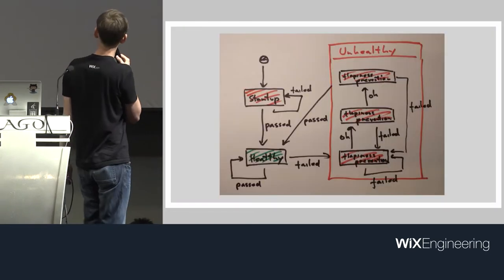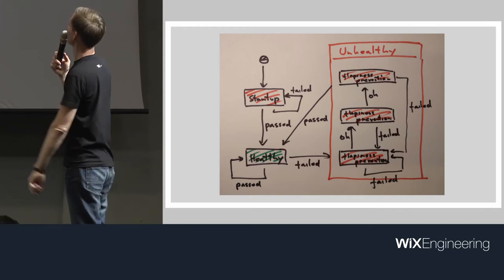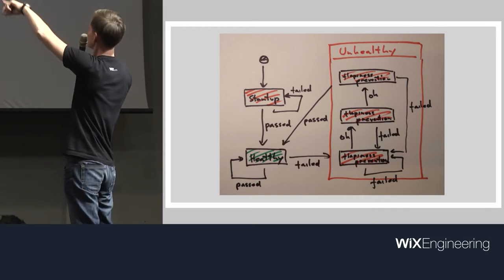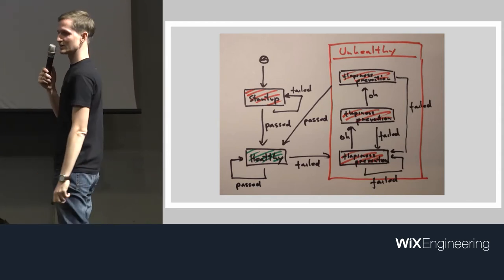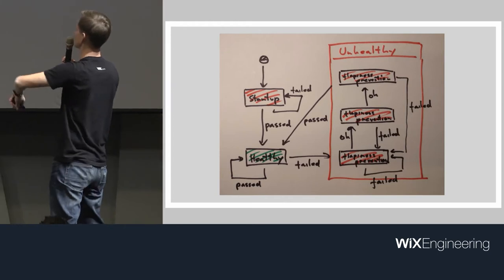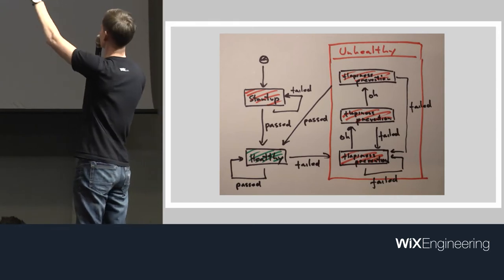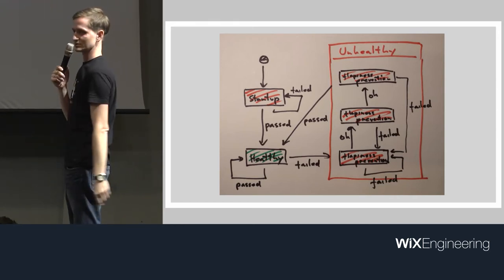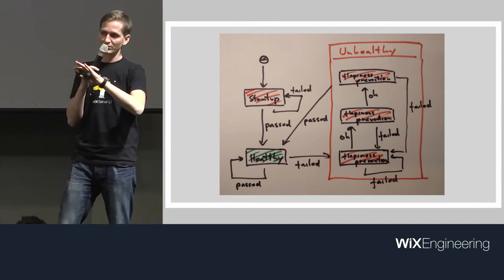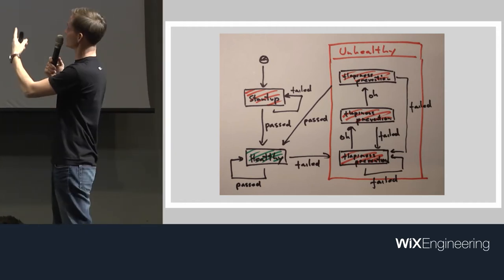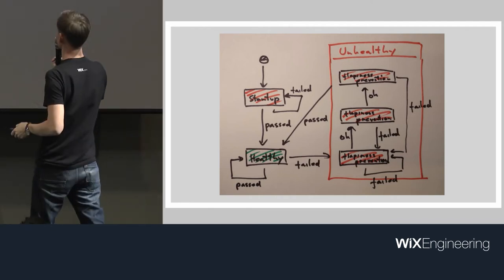Ops contracts — sorry for my art, I'm not great — but this is basically the health check state machine. There are more details, but this is what was implemented in JVM: some flappiness prevention. I'm not sure you would do that right now if we had two platforms — you might solve it in infra — but this was something we needed to solve.